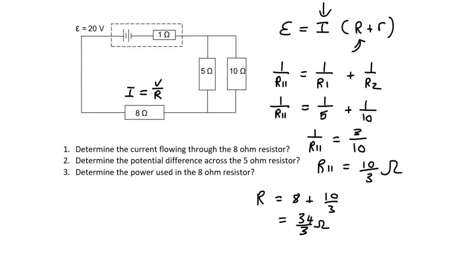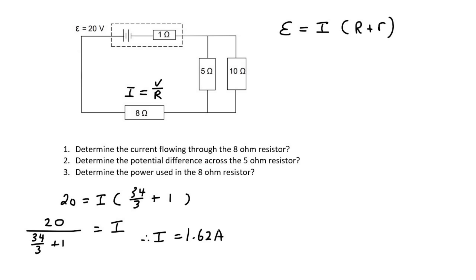And so now we can go use that formula. So the EMF is 20, the current we don't know, external resistance is 34 over 3. See, I'm just using the fractions because I don't want to write all the decimals and I don't want to round off just yet, plus R, which is 1. And so to get I alone, we can just say 20 divided by 34 over 3 plus 1. And so you should find that the current is going to be 1.62. Now we can round off 1.62 amps.